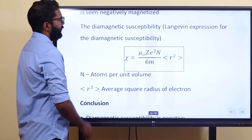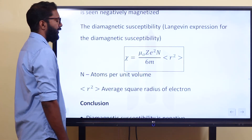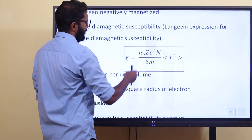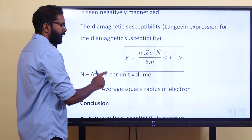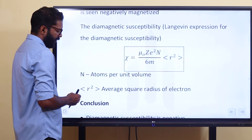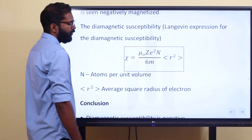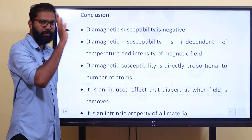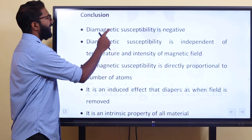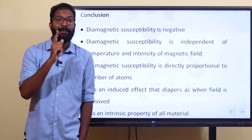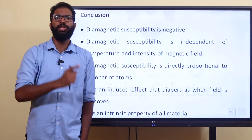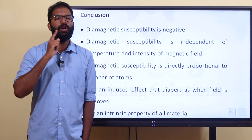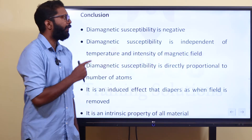The Langevin expression for the diamagnetic susceptibility is: chi equals minus mu_0 Z squared n divided by 6m times r-squared, where r-squared is the average square radius of the electron, Z is the atomic number, and n is the number of atoms per unit volume. The conclusion is that the diamagnetic susceptibility is negative. The field applied causes the revolving electron to precess, giving a negative diamagnetic susceptibility.